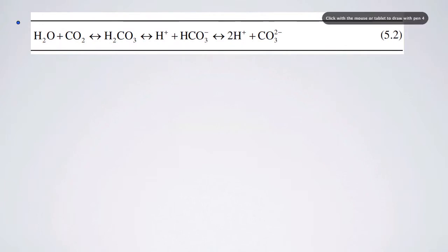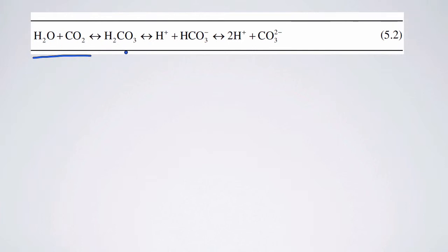CO2 doesn't become limiting in part because there are additional sources and storage of carbon dioxide within water. Equation 5.2 shows that water and CO2 can form carbonic acid. This acid and bicarbonate are formed in a pH-dependent process, and bicarbonate can serve as a further source of CO2 once gaseous CO2 gets removed by plants. Lakes have a lot of buffering due to bicarbonate and carbonate stored within them.